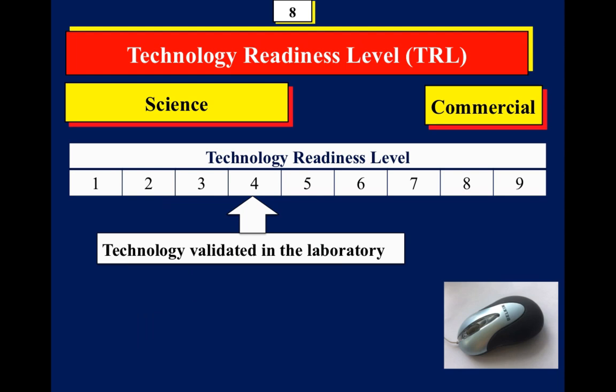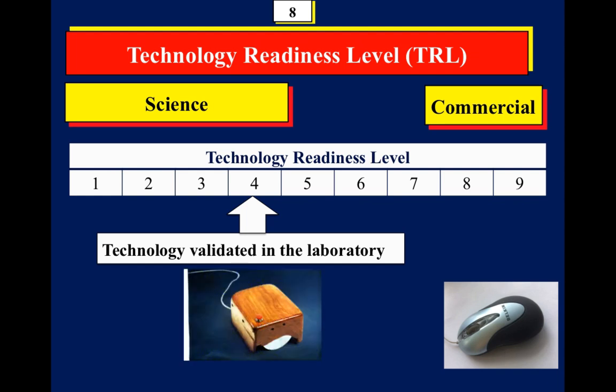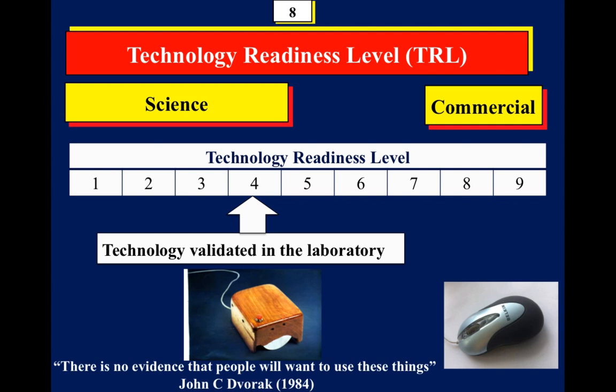TRL three is laboratory experimentation, where you experiment with many different concepts and prove them. TRL four means the technology is working at laboratory level. Here is the official photograph of the first mouse — it's made of wood, probably very heavy, and moving it caused an icon to move across the screen. It was pretty fundamental; you couldn't sell it. In 1984, one of the top computer people in America said they didn't think it would have much of a future.